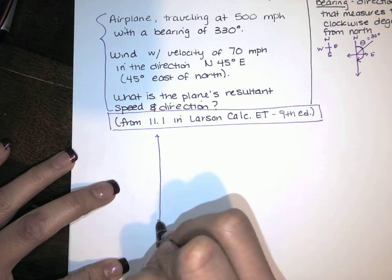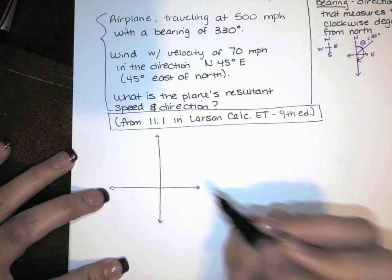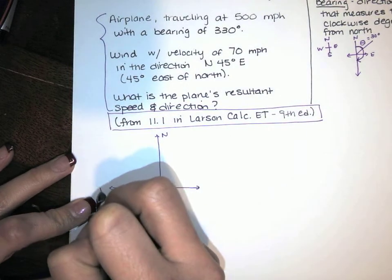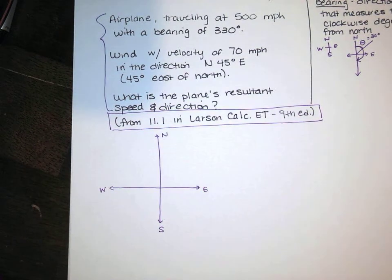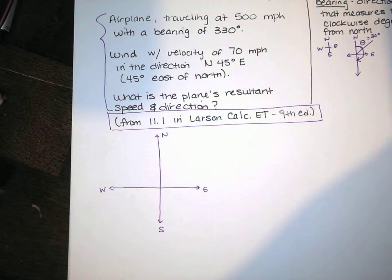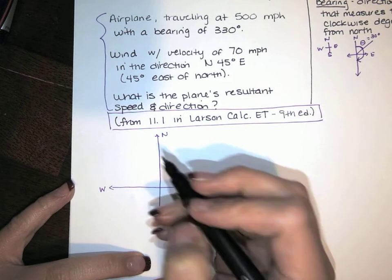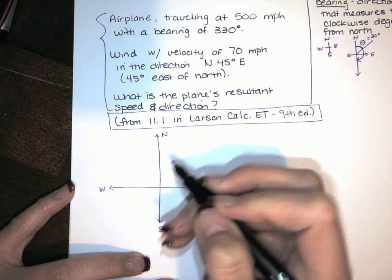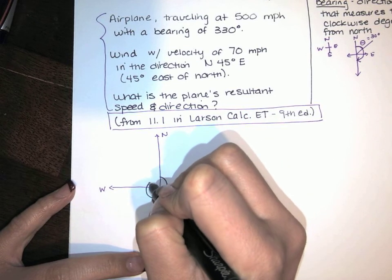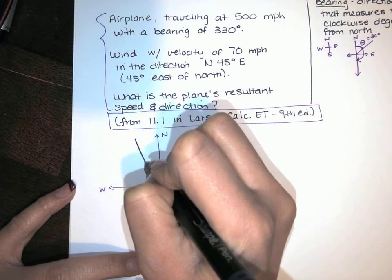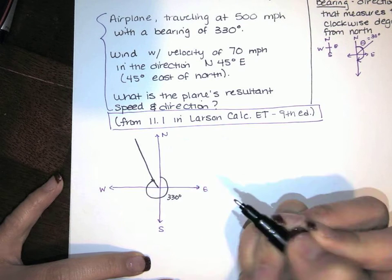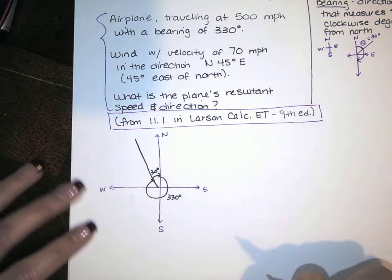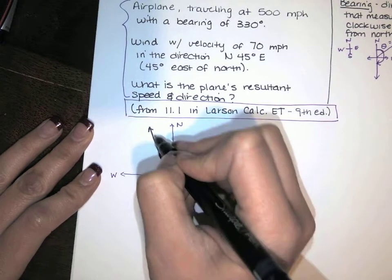...if I draw this over here, the positive y-axis is true north, this is west, this is east, this negative y-axis is south. Being 330 degrees means we start up here at zero degrees, and then we go 90, 180, 270. 360 would be all the way back, but we only go to 330, so it looks like this. That's 330 degrees, and of course that means that angle is 30 degrees. So our airplane is on this vector.